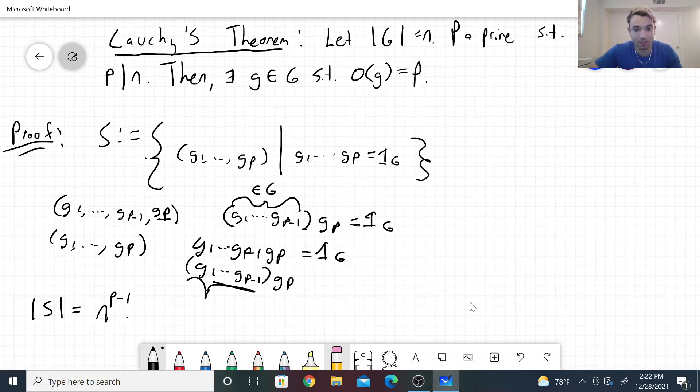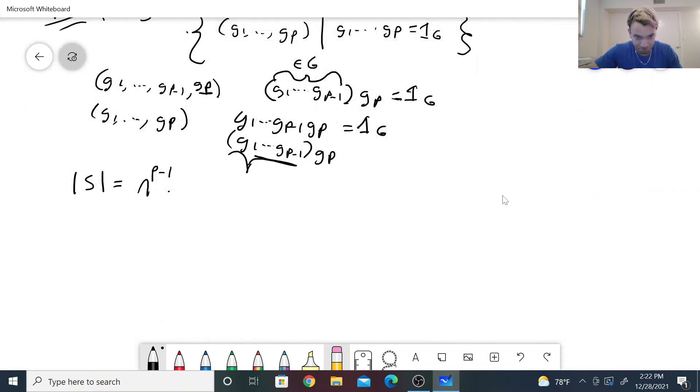Next, we will need to know how we're going to define a nice group action. We are going to let the group Z mod p act on S by the following. So since Z_p is a cyclic group, we can just take a generator, say the coset 1, and we can show how 1 acts on an arbitrary element in S.